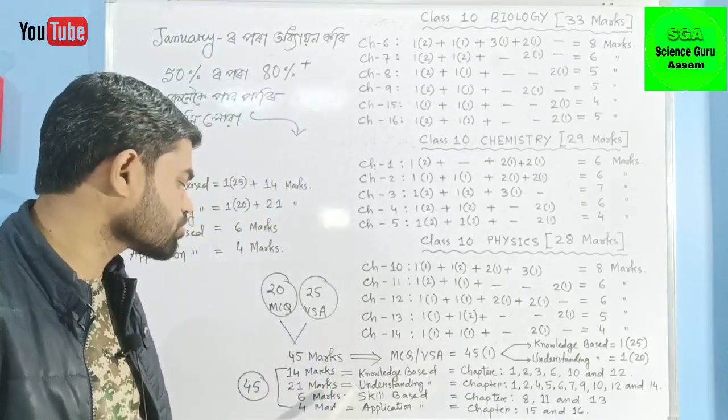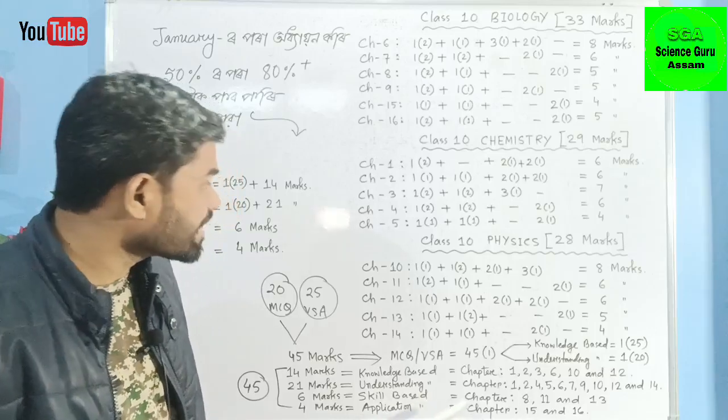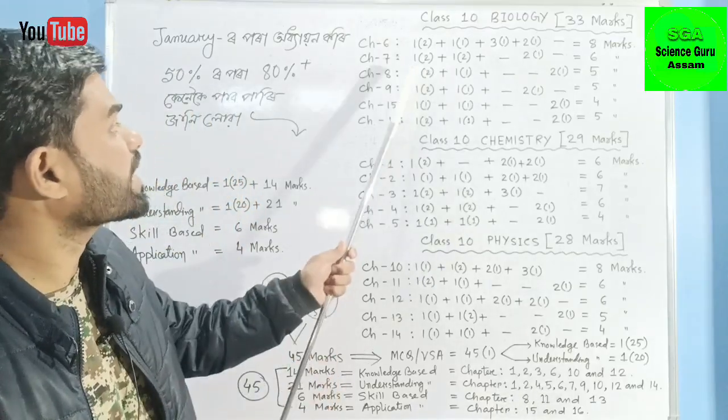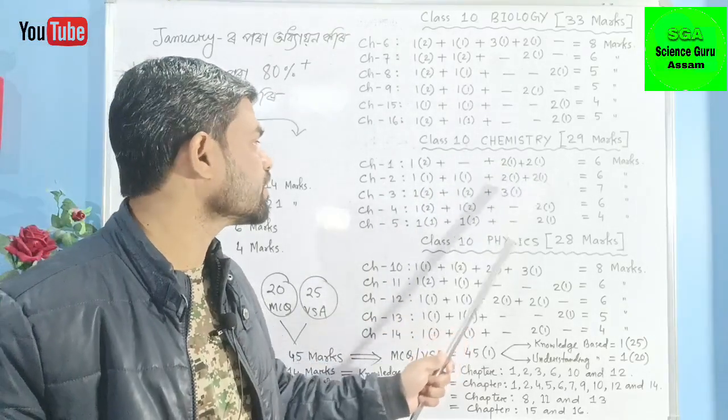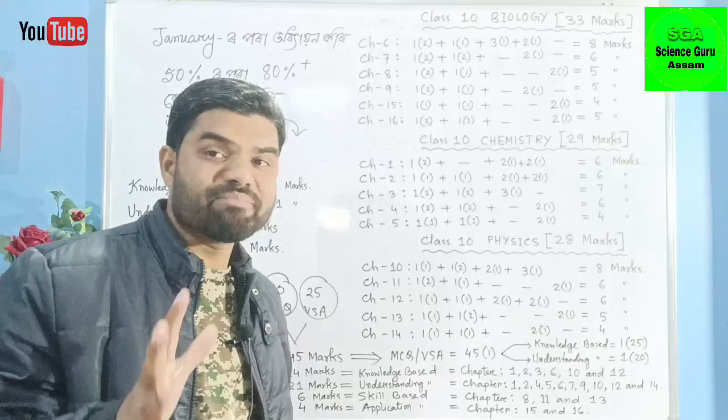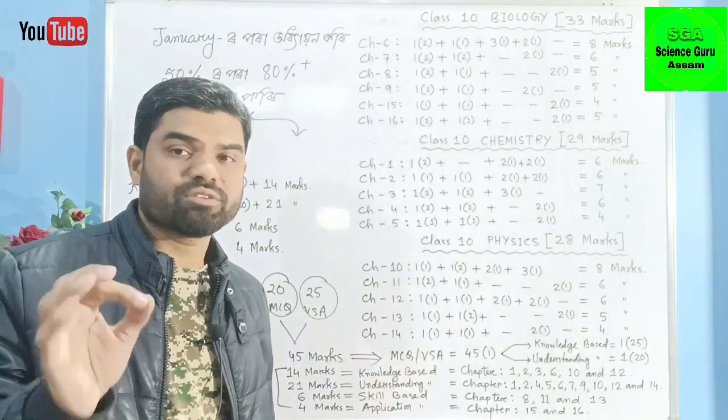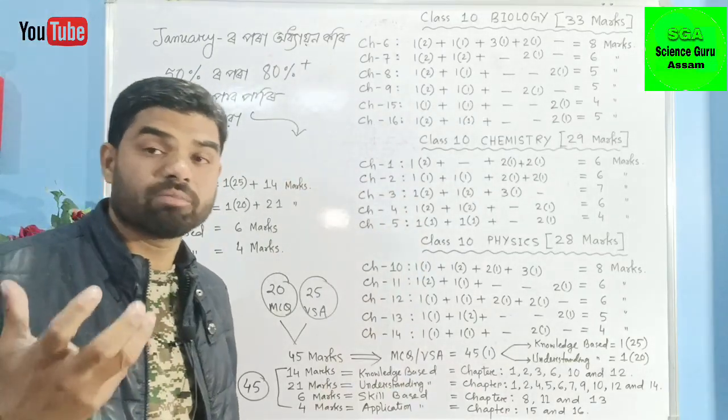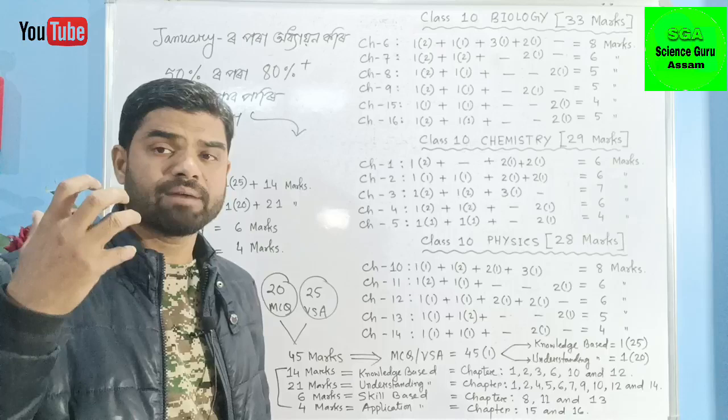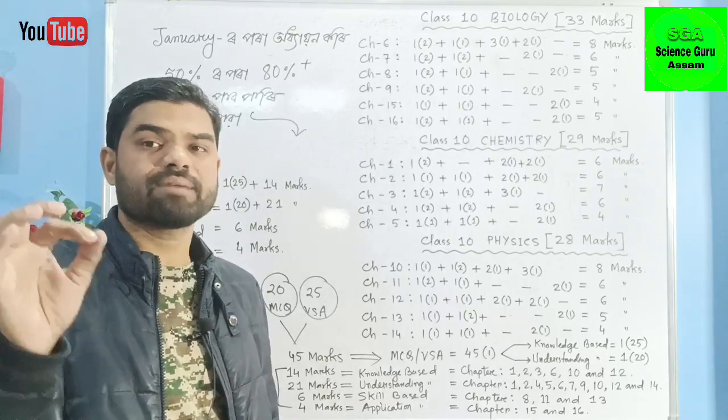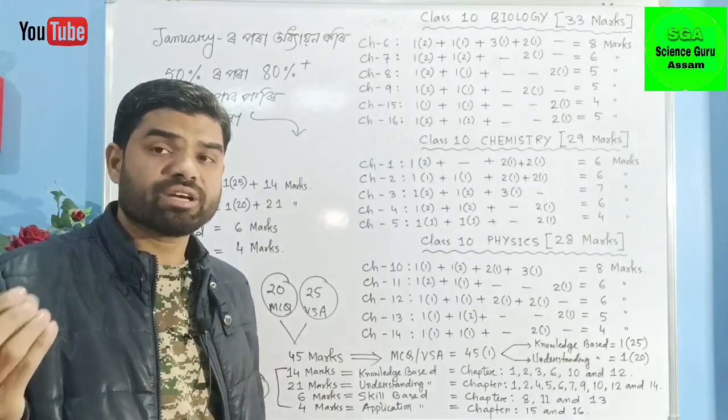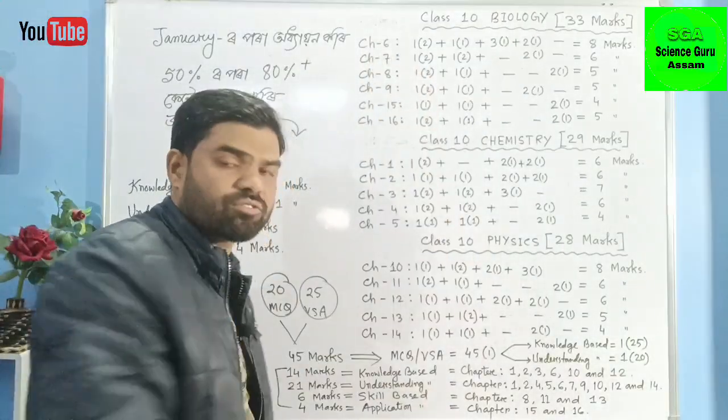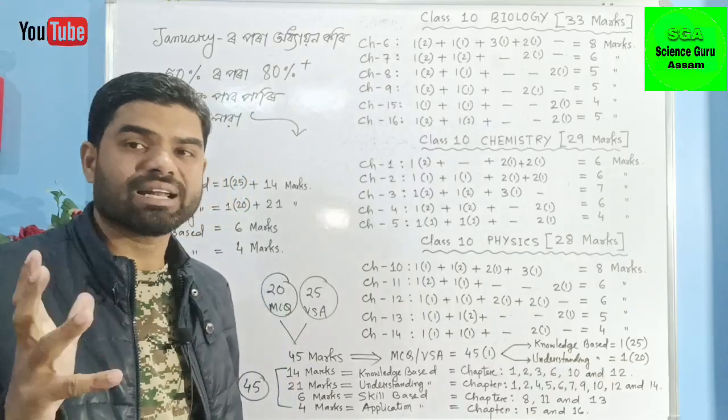For understanding-based questions in Chemistry, chapters 1, 2, 4, and 5 give 8 marks. If your concept is clear, you can answer these understanding questions. I suggest you download our Science Guru Assam app from Play Store. Purchase the chemistry notes there - you'll get separate BSA MCQ notes to study.